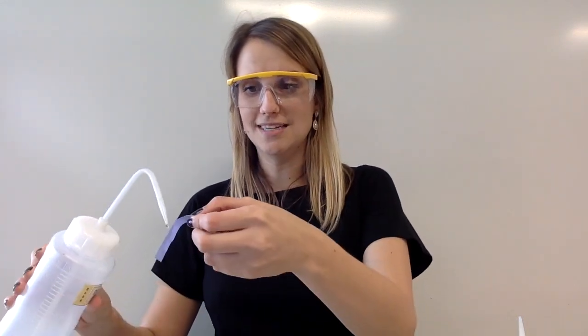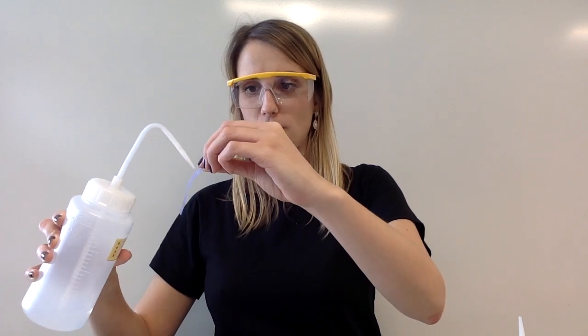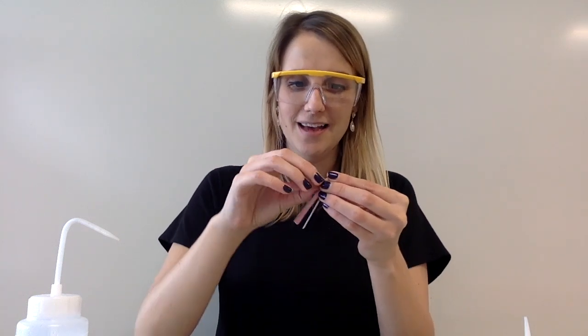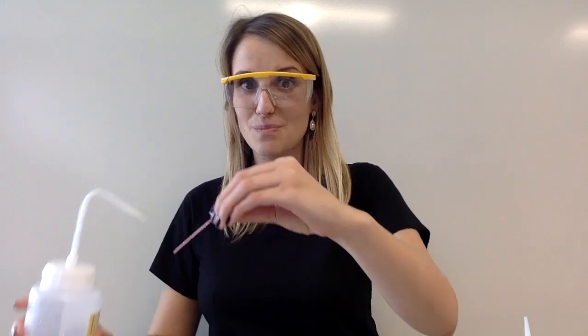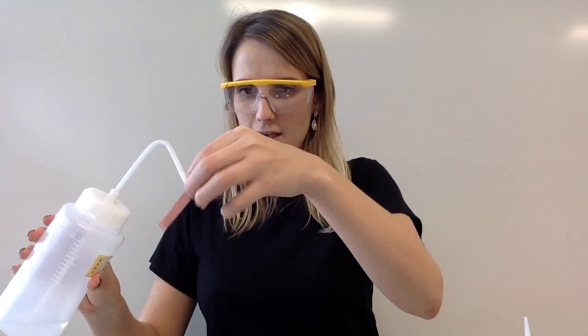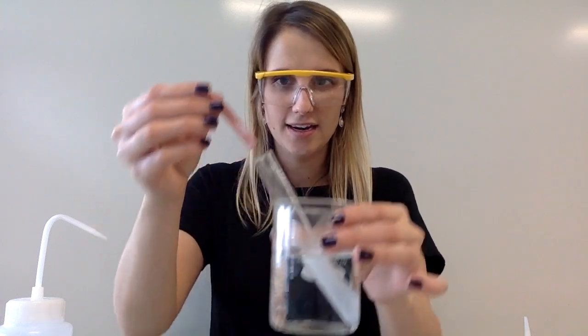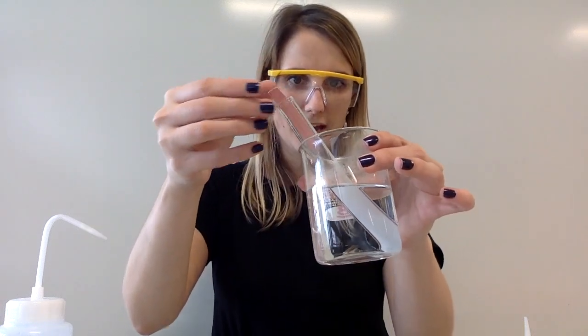So I'm going to put some damp litmus paper—oh no, wrong one—put some damp red litmus paper, because that's the one I need for my test for ammonia gas, and I'm going to tuck that into the top of my container here.